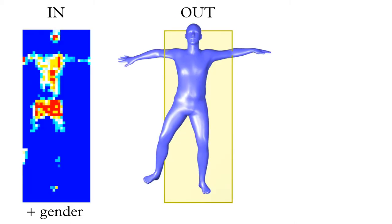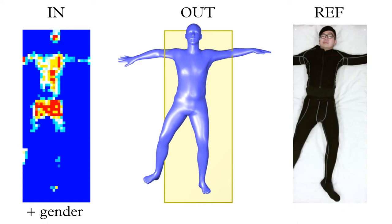We present a deep learning model trained only on synthetic data that infers the pose and the shape of a person from a pressure image. Here's a photo of the real person to compare.